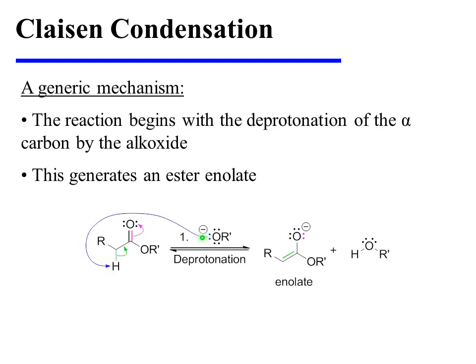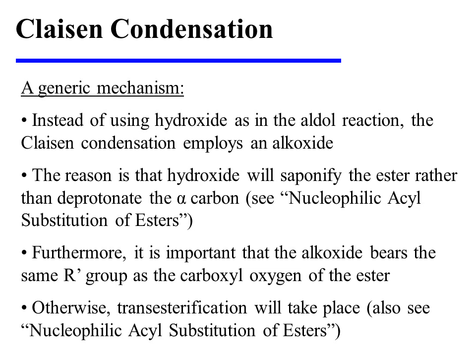The reaction begins with the deprotonation of the alpha carbon by the alkoxide, which generates an ester enolate. Instead of using hydroxide as in the aldol reaction, the Claisen condensation employs an alkoxide as the base. The reason is that hydroxide will saponify the ester rather than deprotonating the alpha carbon. A review of this process can be found in the video on nucleophilic acyl substitution of esters.